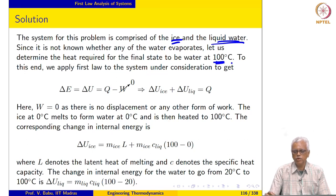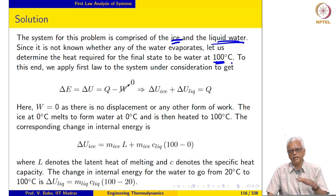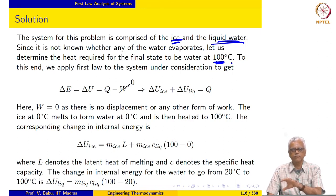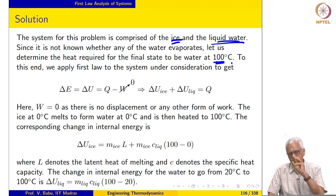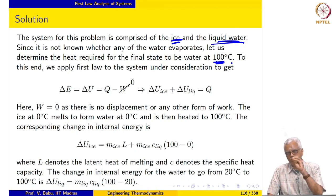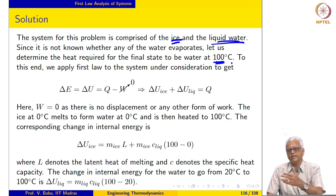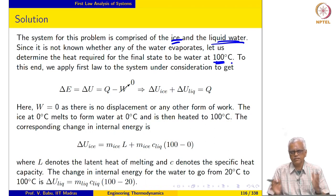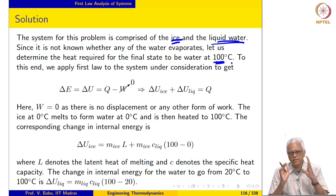Since we do not know how much of the water, if any, is going to evaporate, we first calculate the amount of heat required to take this system to a final temperature of 100 degrees Celsius, assuming everything is at atmospheric pressure. If the supplied heat exceeds this, then we know some of the water is going to evaporate, and we can calculate the amount. This is a very logical way of approaching the problem.